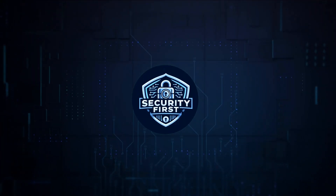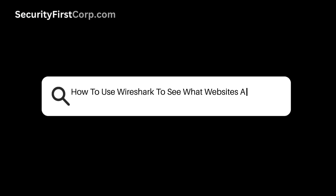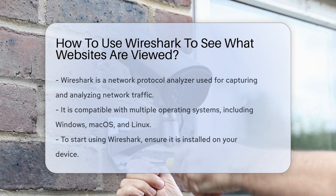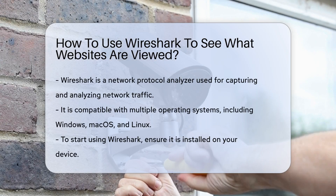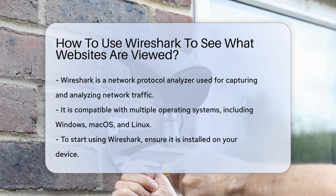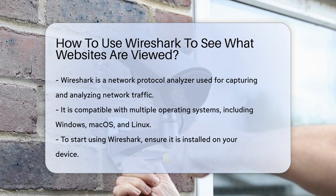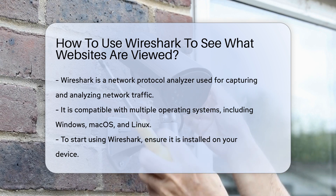Security First Corp. — Safety through knowledge. How to use Wireshark to see what websites are viewed. Wireshark is a powerful network protocol analyzer that allows you to capture and analyze network traffic. Understanding how to use this tool can provide insights into the websites being accessed on your network.